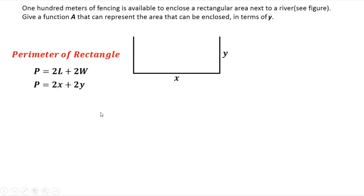But on our illustration we only have 1x, and P is 100. So 100 is equal to 1x plus 2y. And since we need to solve for the area in terms of y, then we need to isolate x. To isolate x, just transpose this y to the left side. So 100 minus 2y equals x. This is our first equation.